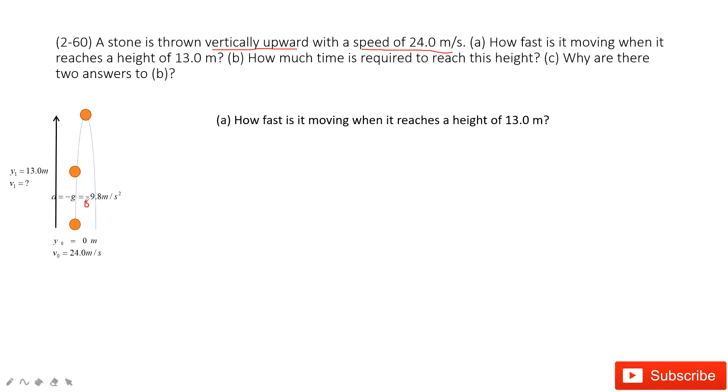We consider the equation relating velocity with displacement. We input the known quantities. The y0 is 0. We get the equation for V1, and the answer is V1 equals 18 meters per second.